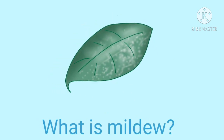Mildew grows on any damp cloth, leather, or plants. When the mildew grows on plants, it can damage them. You can find mildew on walls and leaves.